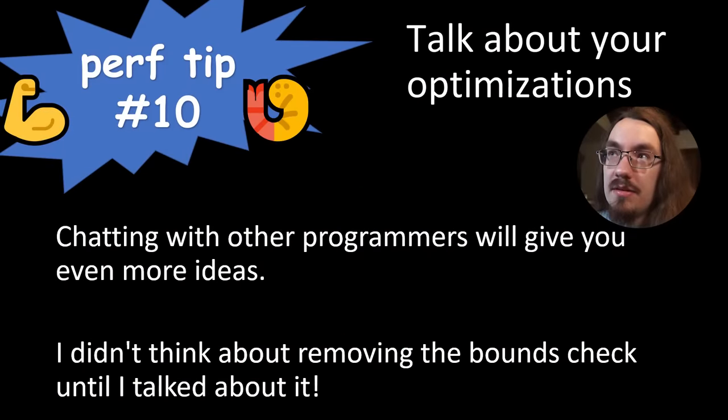So perf tip number 10 is to talk about your optimizations. I didn't have this idea of deleting the bounds check until I made this video. And when I made the video, I decided, well, I should probably check the performance of deleting the bounds check because I know it's possible. Let's try it. And I was pleasantly surprised that I made things even faster. So if you talk about your optimizations with people, even if you just rubber duck and talk to nobody, going through that thinking process can unlock optimization opportunities.